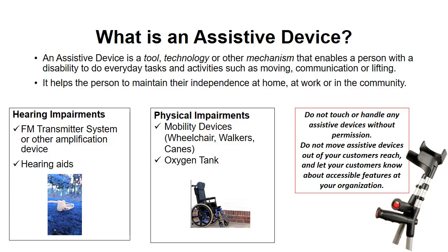Some examples of assistive devices include FM transmitter systems or amplification devices, hearing aids, mobility devices such as wheelchairs, walkers, or canes, and oxygen tanks.